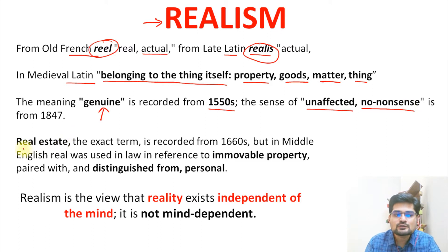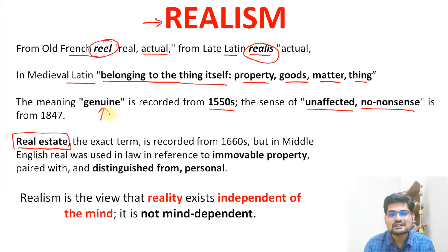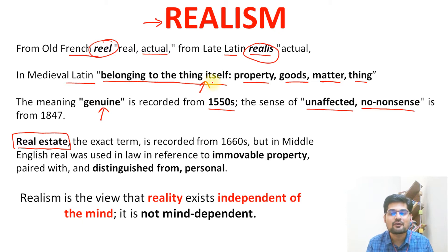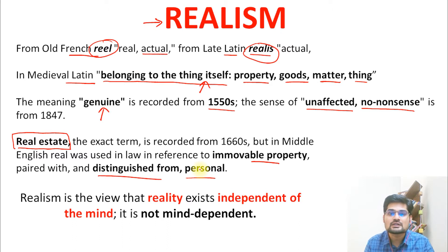When we also talk about real estate, whenever it is considered as part of property dealing, the word 'real estate' comes from this same connotation of belonging to a property, good, matter, or thing. It is an immovable property and is distinguished from personal property. So real estate and personal property are different things — that is where this word comes from.